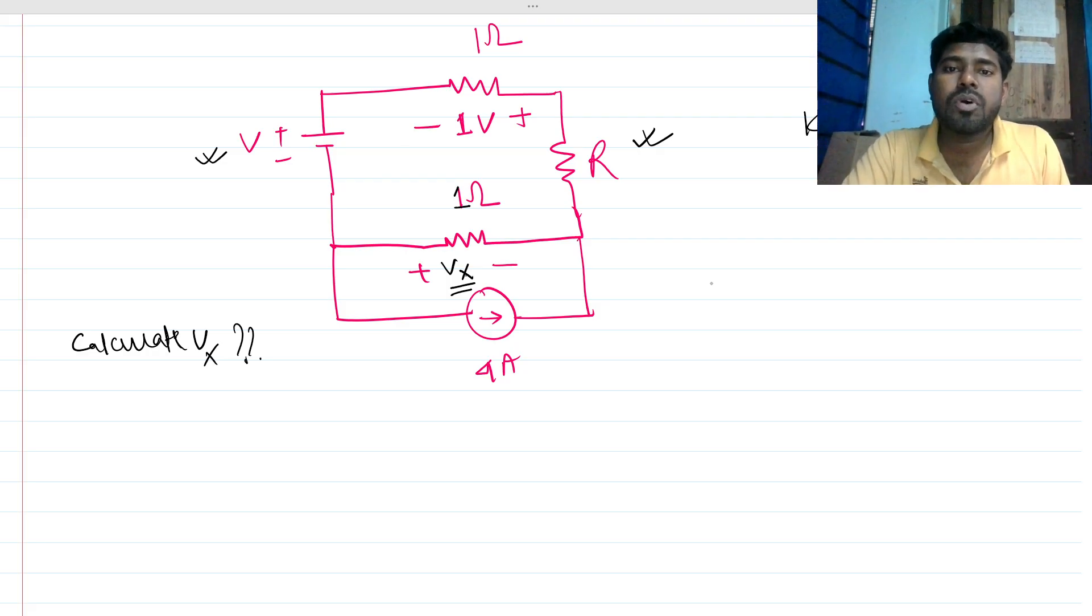We can see the voltage drop across this one-ohm resistance is one volt, so there must be a current flowing through the resistance in this way, which should be one ampere. Because the voltage across the one-ohm resistance is one volt, this will be one divided by one, so it will be one ampere.